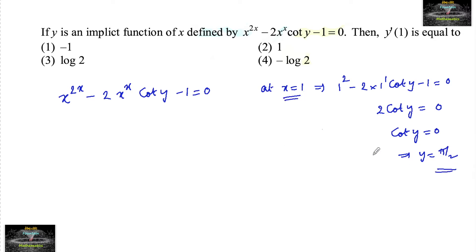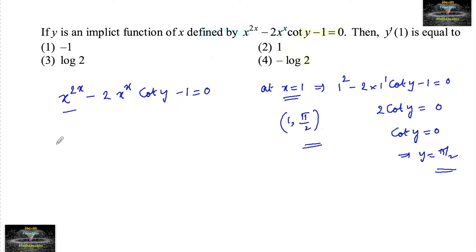So at x equal to 1 we get y equal to pi by 2, meaning (1, pi/2) is our point. Now before solving the differentiation, let's separately find the derivatives of x to the power of 2x and x to the power of x.